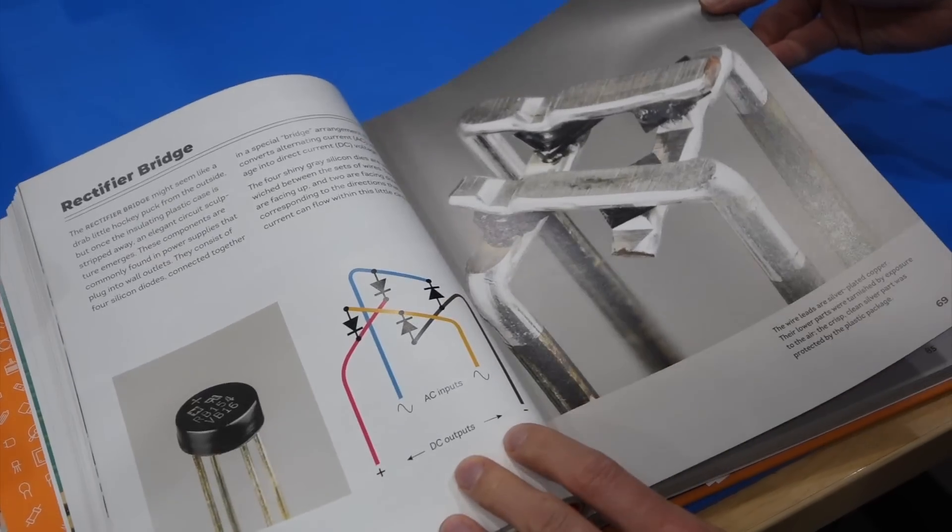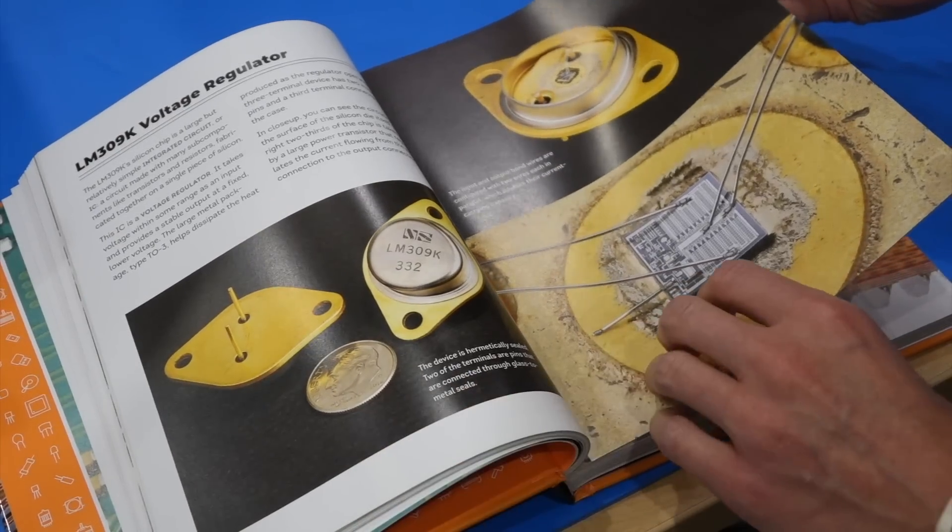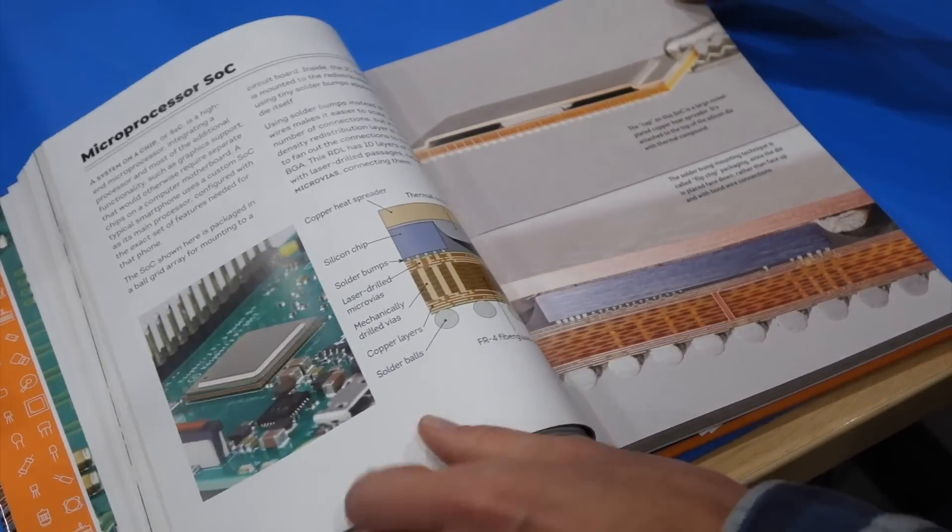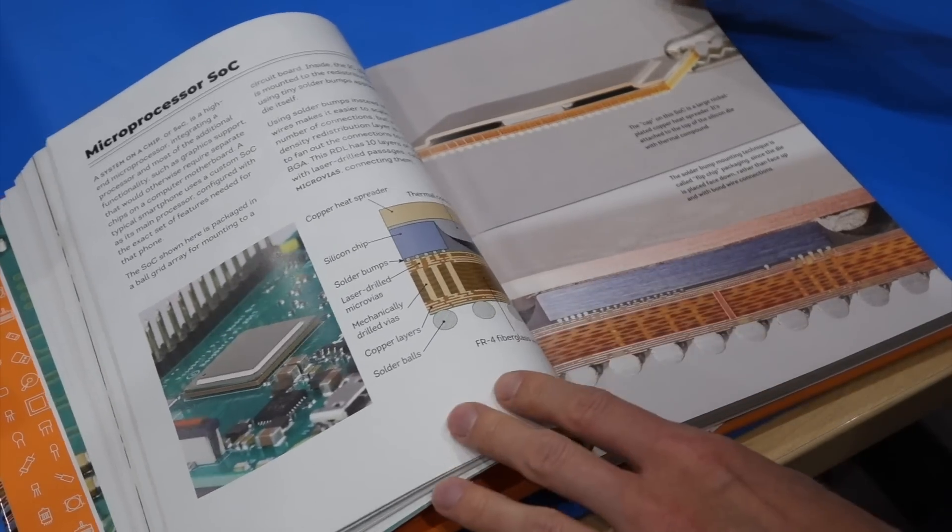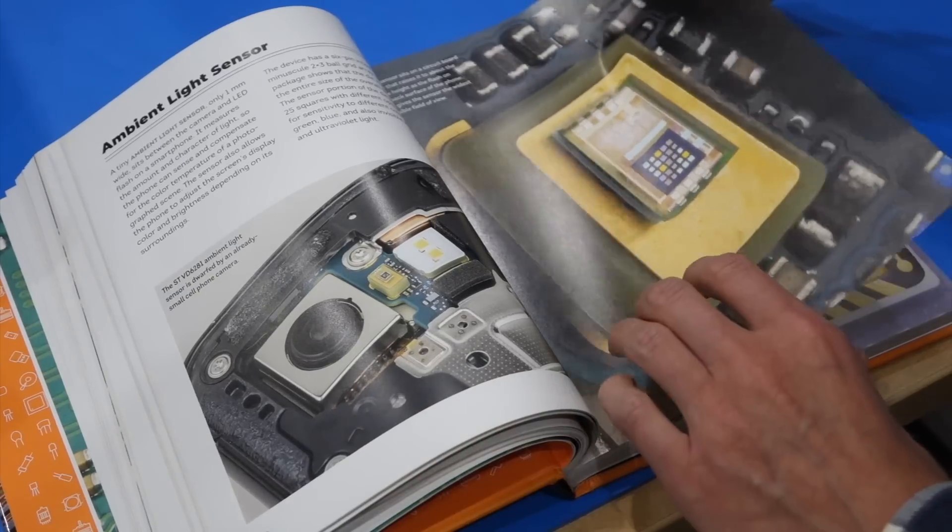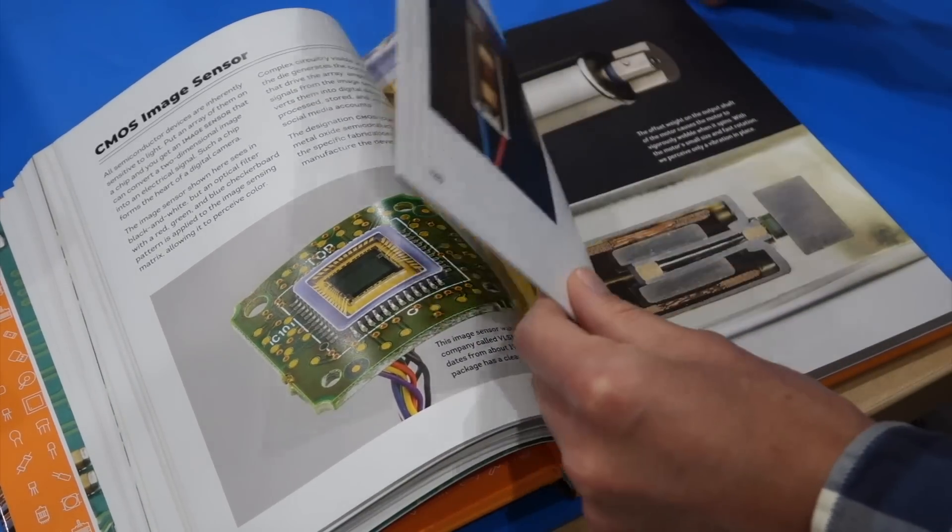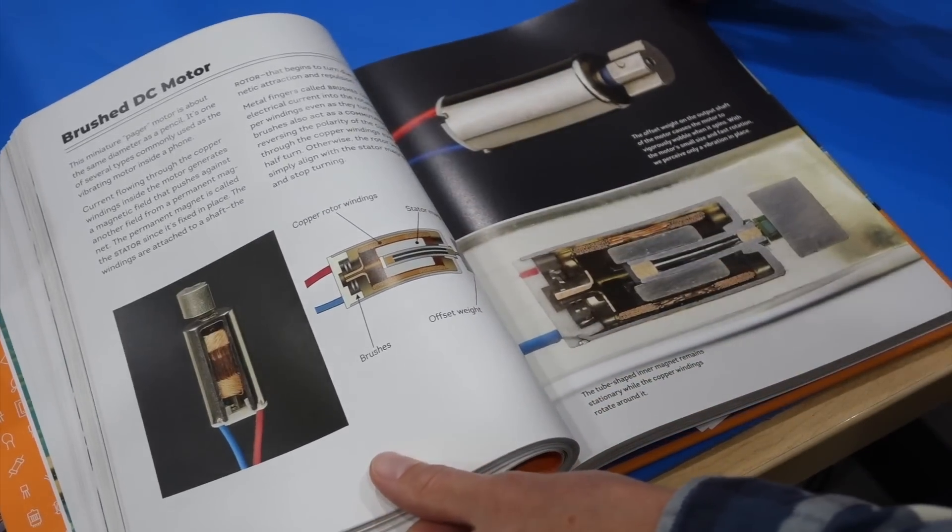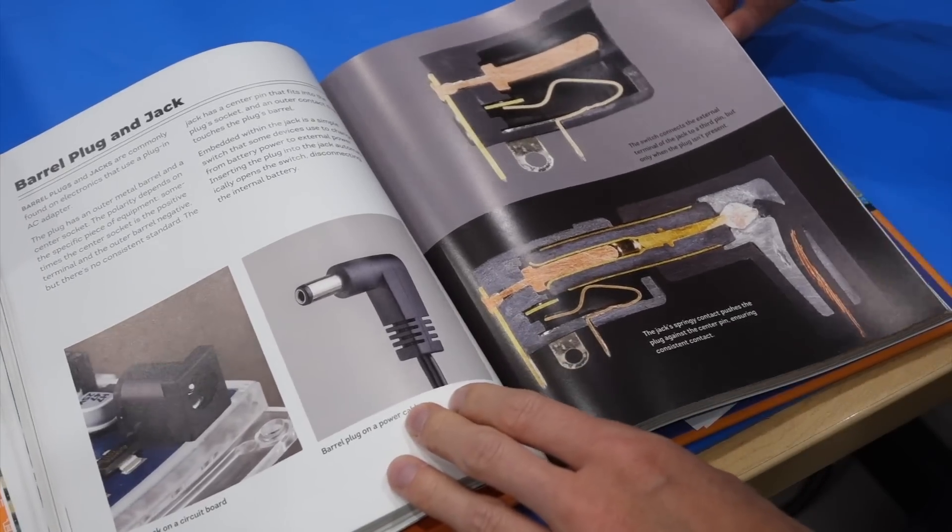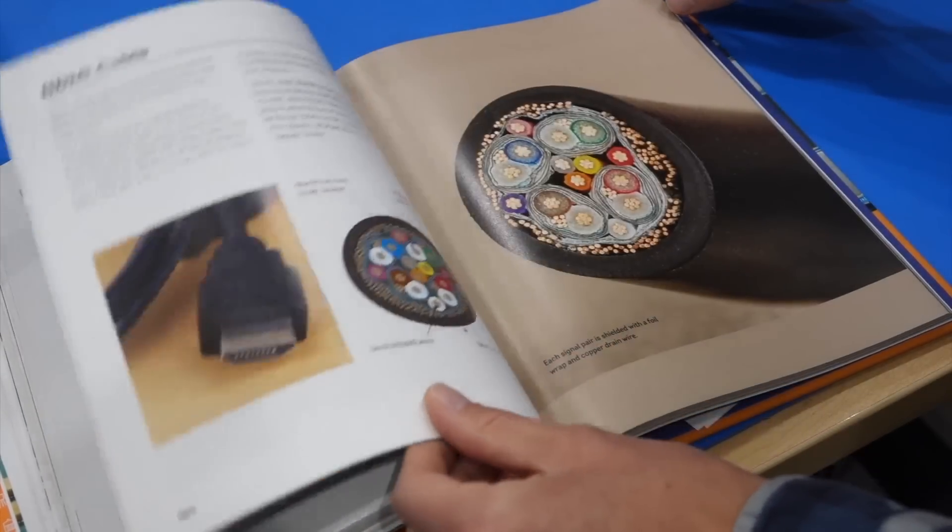Oh look at rectifier bridge. We've got some chips in here. More modern chips. These are very complicated inside. Some sensors, ambient light sensor, image sensors, motors, connectors, and cables too.